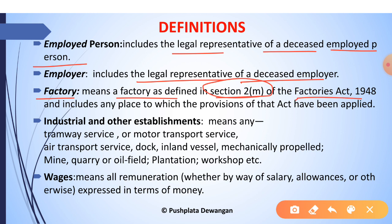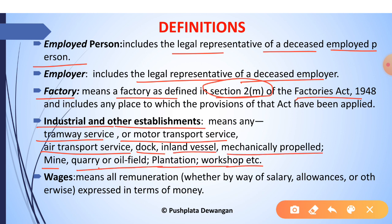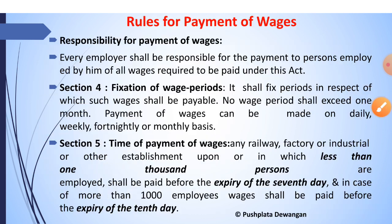Factory means the factory as defined under Section 2(m) of the Factories Act 1948, and includes any place to which the provisions of this Act have been applied. Industrial or other establishment means any tramway service, motor transport service, air transport service, dock, inland vessel, mechanically propelled machinery, mines, quarry, oil field, plantation, and workshops, etc. Wages means all remuneration, whether by way of salary, allowances, or otherwise, expressed in terms of money.